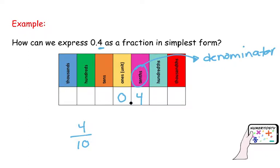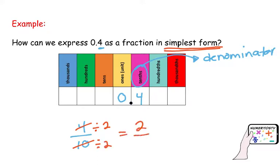Fractions must always be in simplest form. How do I know if I can simplify this fraction? Well, 4 and 10 are even, which means I can divide them by 2. If you want a refresher about simplifying fractions, I am going to leave the link in the description. So, 4 and 10 are both divisible by 2: 4 divided by 2 is 2, and 10 divided by 2 is 5. So 2 fifths is my fraction in simplest form — 0.4 is equivalent to 2 fifths.